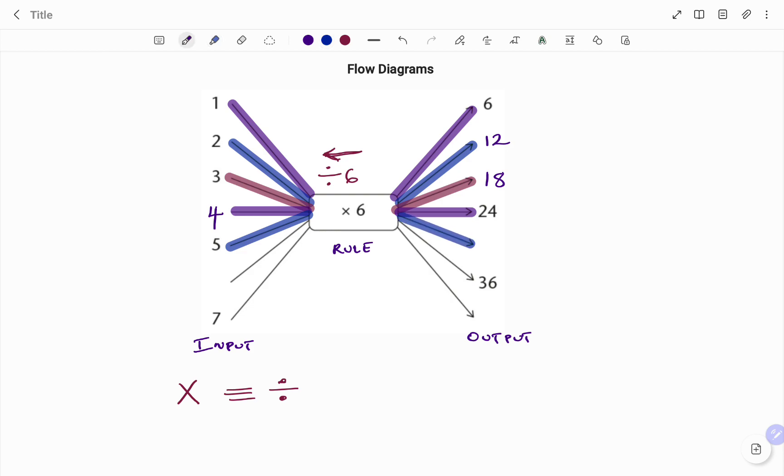Note that the next input is also blank, so therefore we're going to use our inverse rule which states that the inverse of multiplication is division. So if I'm coming in from 36, I have 36 divided by 6, and then my output will be 6.